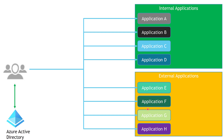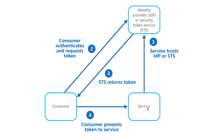Let's have a closer look at what's happening behind the scenes between one of these applications and Azure Active Directory. This diagram from Microsoft documentation explains it well. First, you build a trust relationship between your application and the identity provider, so the application trusts it to send the STS token. When an employee wants to authenticate, they are directed to Azure Active Directory, which sends back an STS token the employee can use to communicate with your service securely.